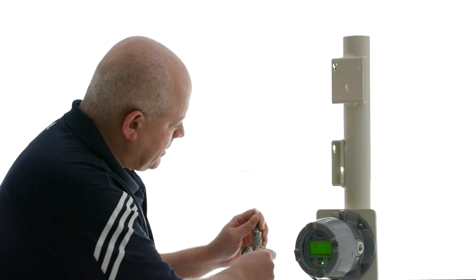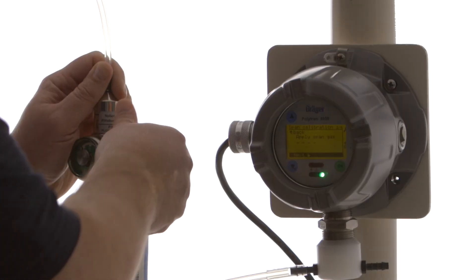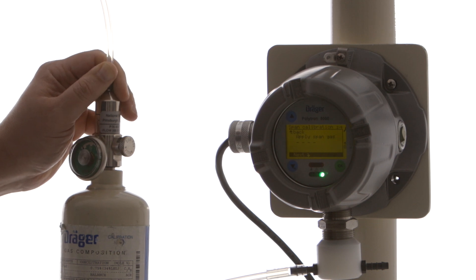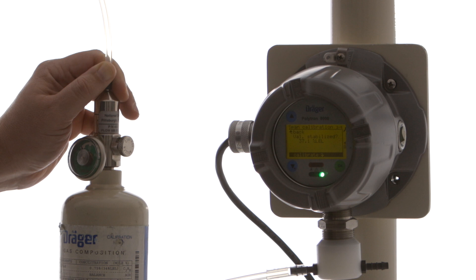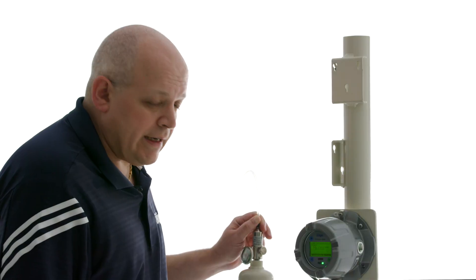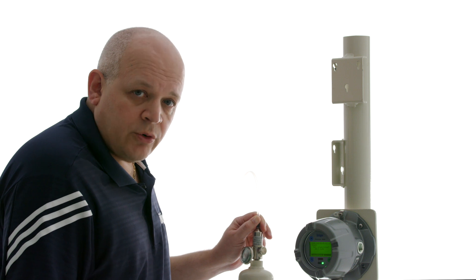And now it's telling us to apply the span gas. I'm going to turn my regulator on. The regulator should be a 0.5 liter per minute flow regulator. Hit next. And now we're going to wait for a value to stabilize. Again it doesn't have to hit 34% LEL. It just needs to be stable.